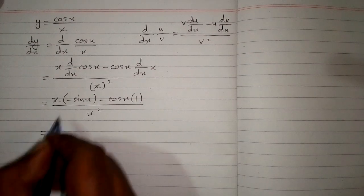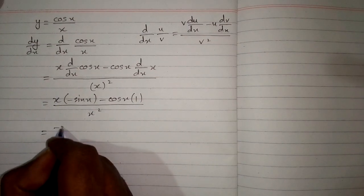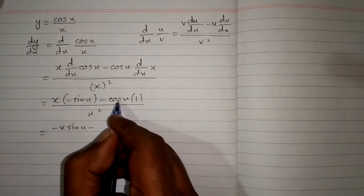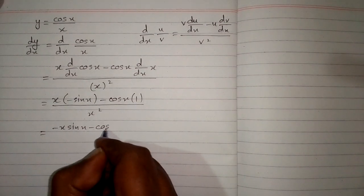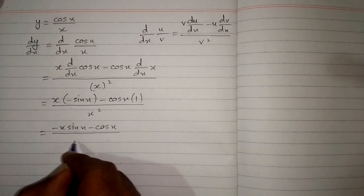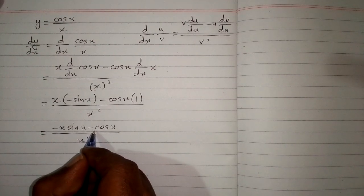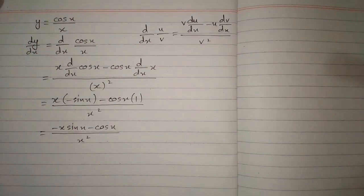So we have x times minus sin x is minus x times sin x minus cos x multiplied by 1 is cos x. So we have minus x sin x minus cos x upon x squared.